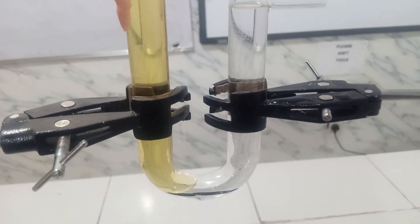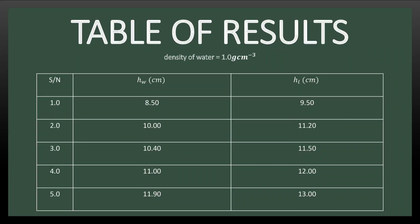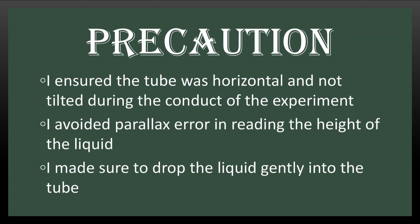Here is how the table looks. You can see the compilation of the height of water measured in cm, and to the right, the compilation of the height of the liquid — the granule oil — also recorded in cm. With this table, we are going to plot a graph of the height of water on the vertical axis against the height of the liquid on the horizontal axis. But first, what precautions did we take in this experiment?